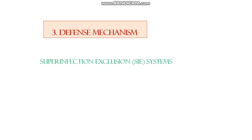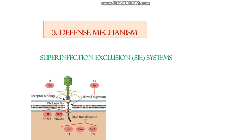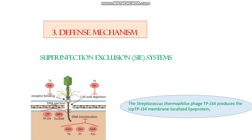Defense mechanism number three is the superinfection exclusion system. This is a slightly more complicated system in which bacteria block the entry of viral DNA — that is the main mechanism. It has been found that the Streptococcus thermophilus phage TP-J34 produces a specific localized lipoprotein, and this lipoprotein is responsible for blocking the entry of viral DNA into the bacterial cell.